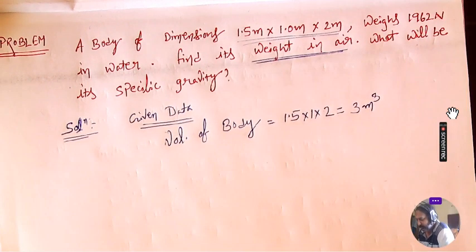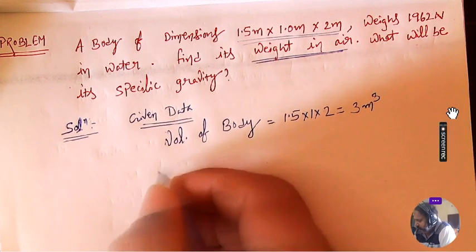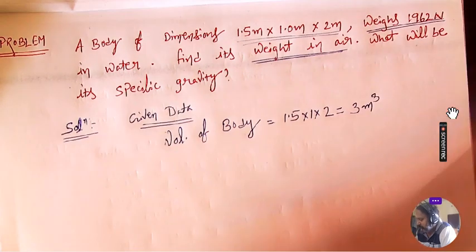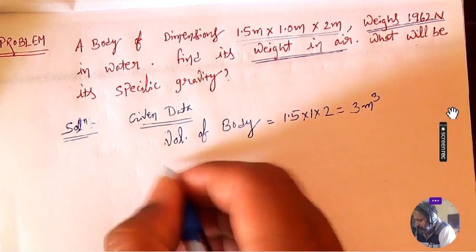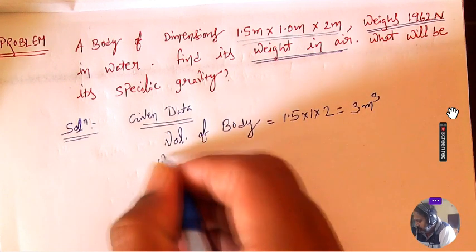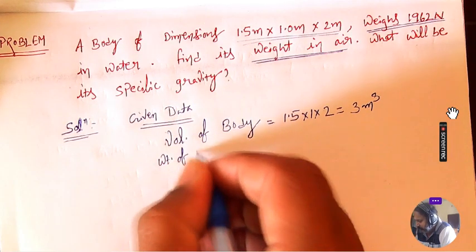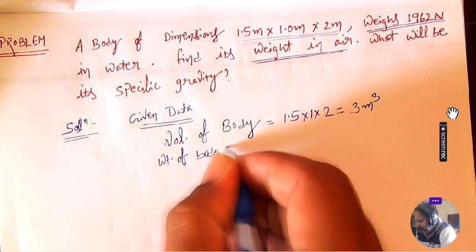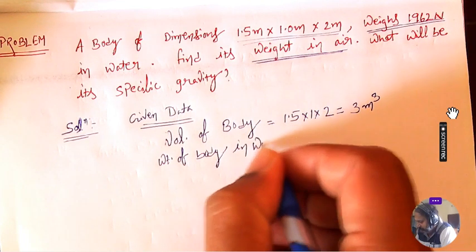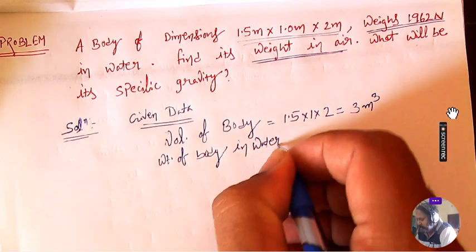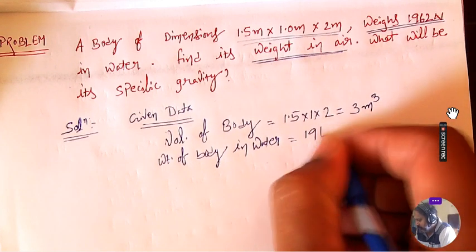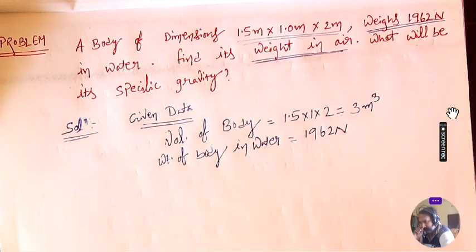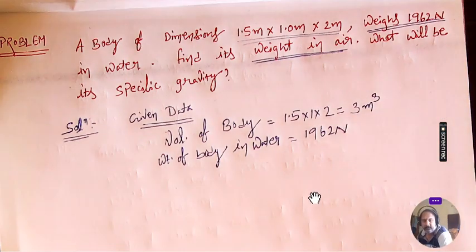So we get 3 meter cube. Now, in water, what is the weight of that particular body which is having the volume of 3 meter cube? The weight of the body in water is 1962 Newton.